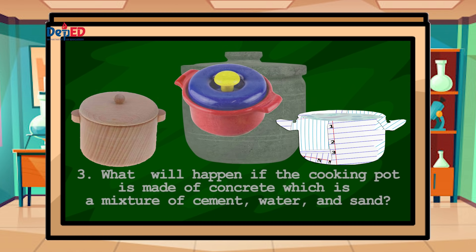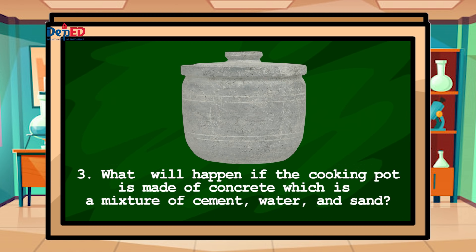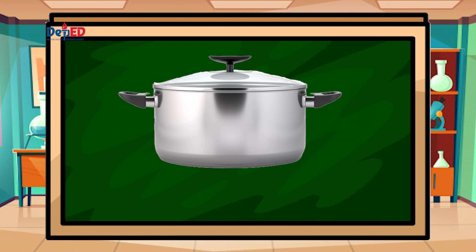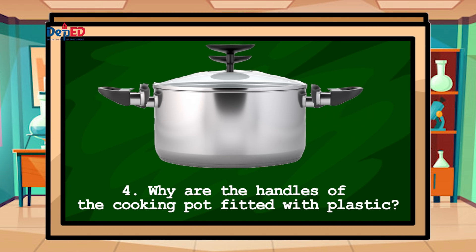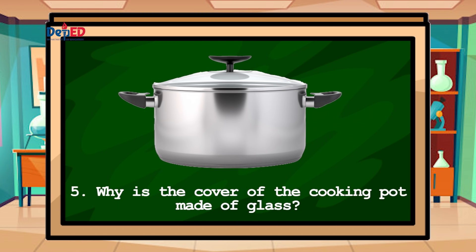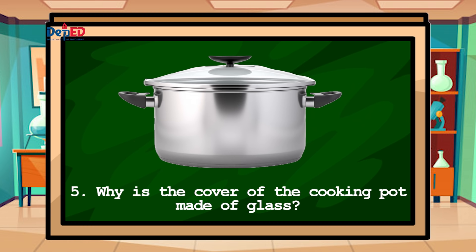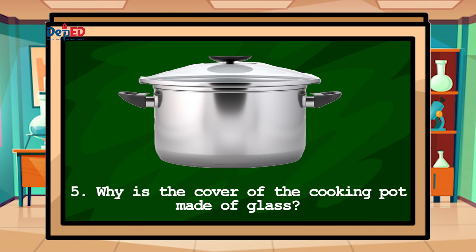Number 3: What will happen if the cooking pot is made of concrete, which is a mixture of cement, water, and sand? Number 4: Why are the handles of the cooking pot fitted with plastic? Number 5: Why is the cover of the cooking pot made of glass?